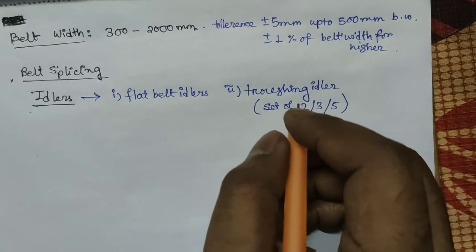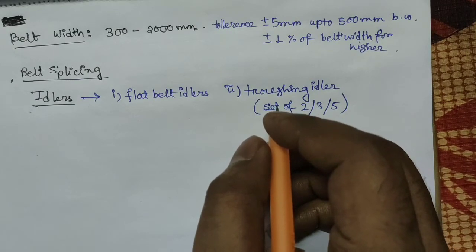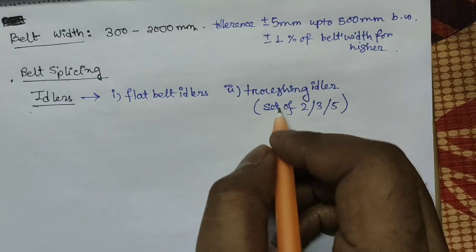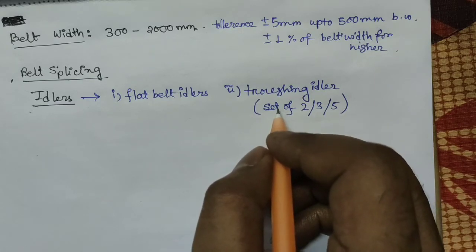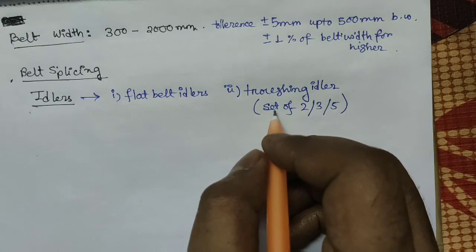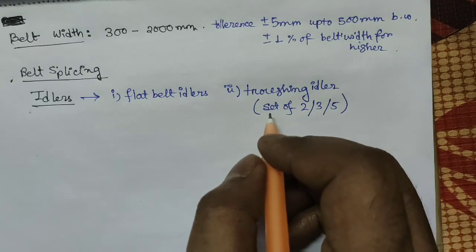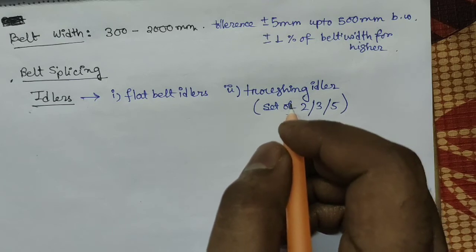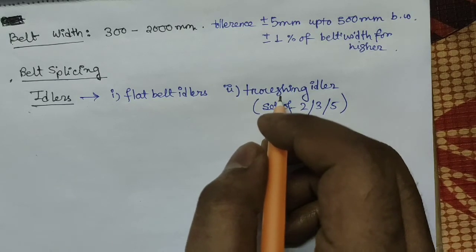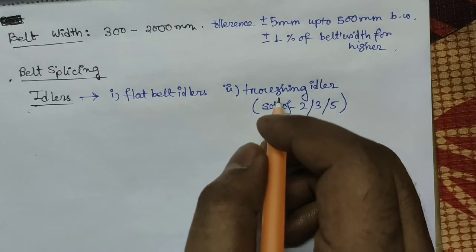Idlers are generally made from steel tubes where the diameter of both ends is the same. The tubes are mounted on anti-friction bearings over a fixed steel spindle. The ends of the spindles are flat machined to standard dimensions for quick fixing in slots of the idler structure. The dimensions and troughing angle of idlers are standardized by BIS standard — angles of 15, 20, 25, or 30 degrees. Idler spacing in the loaded run is a function of bulk weight of materials and width of the belt.